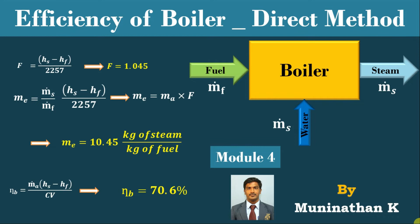In last modules — module 1, module 2, module 3 — we have discussed what is meant by actual evaporation ratio and equivalent evaporation ratio. Also, we have discussed the difference between actual evaporation ratio and equivalent evaporation ratio, and how to find out boiler efficiency using the direct method, along with the merits and demerits of direct method boiler efficiency evaluation.